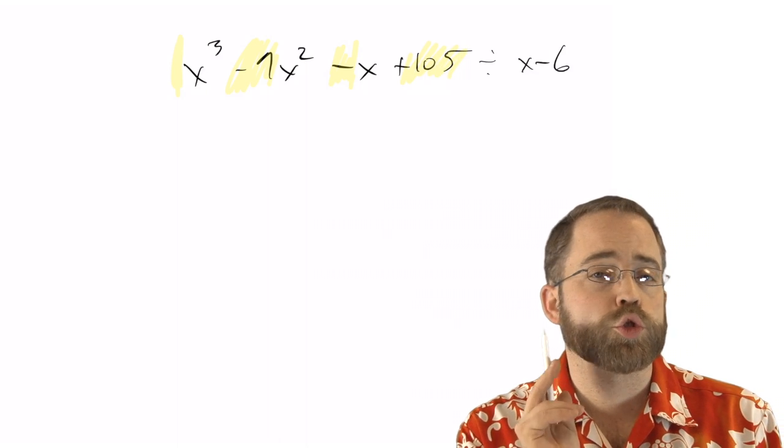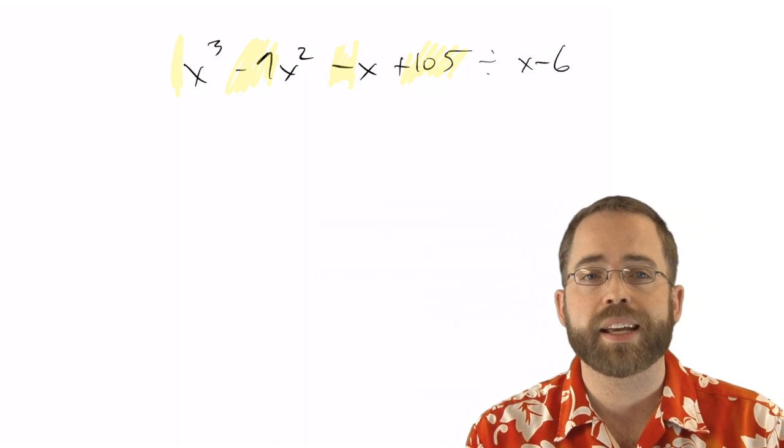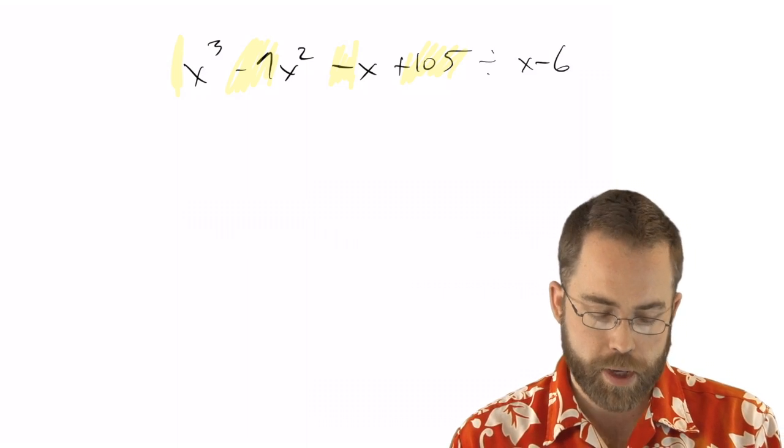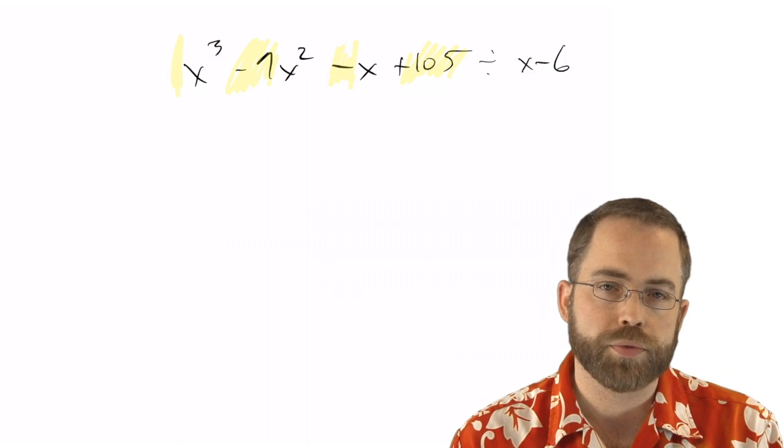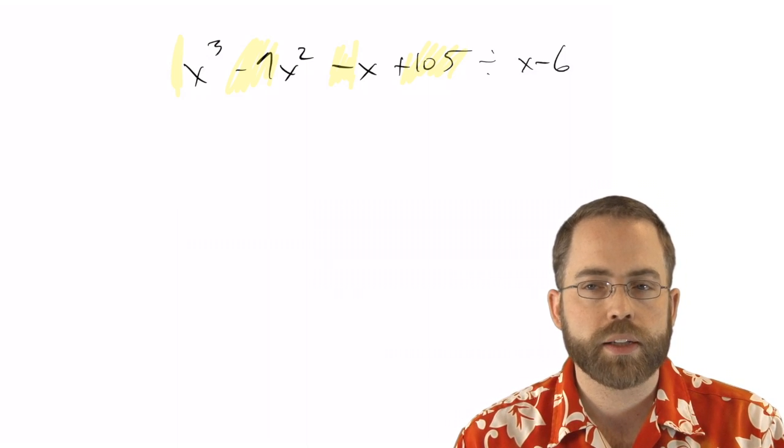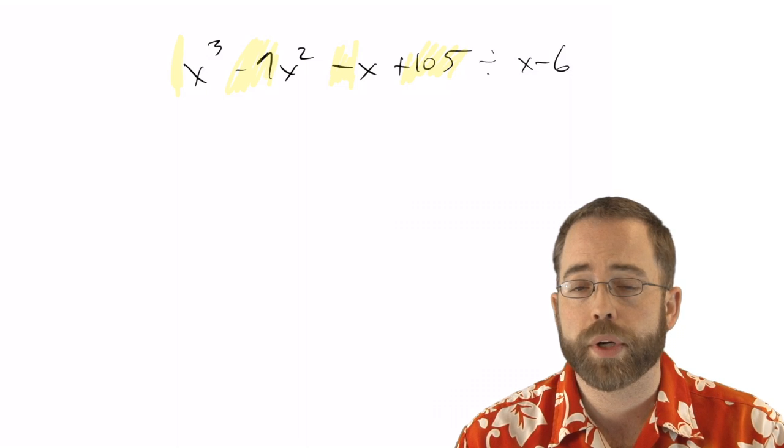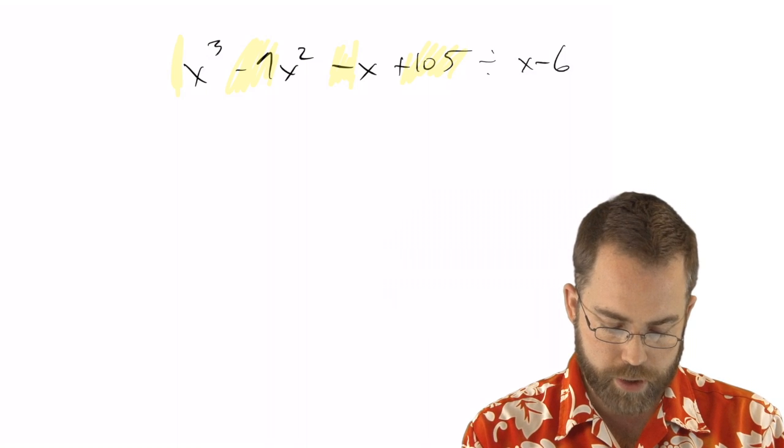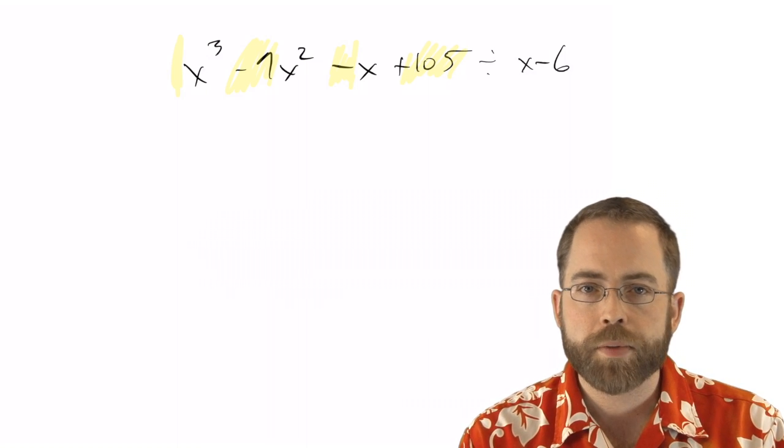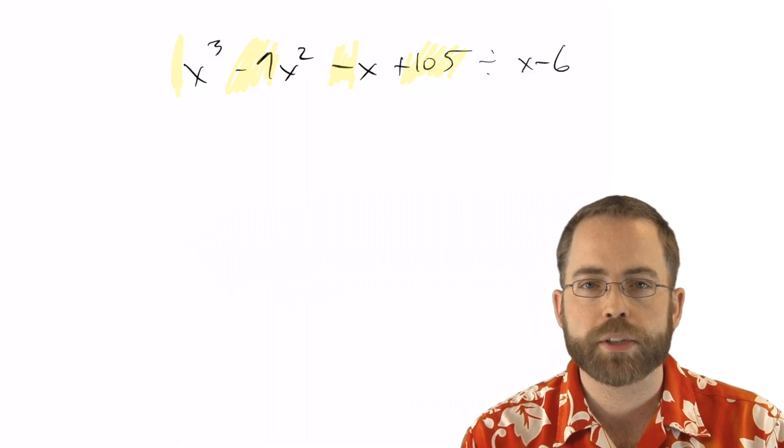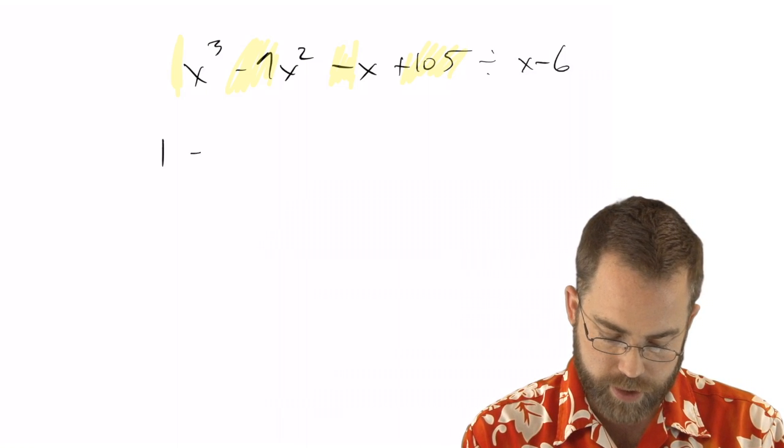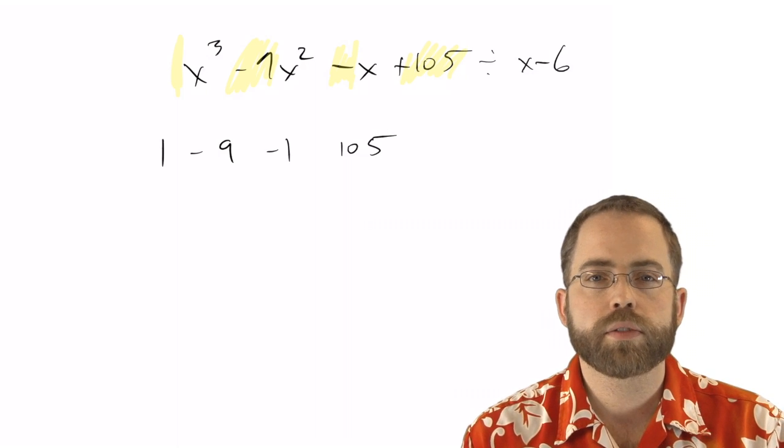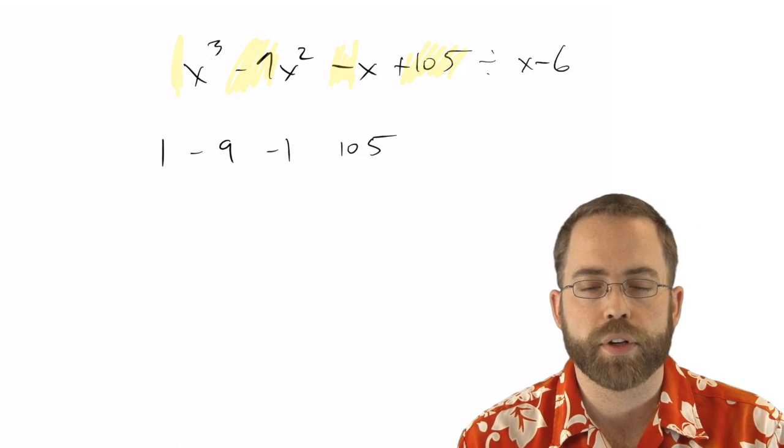Now the part where you're going to screw up, where you're going to make a mistake, is there's going to be a term missing. So for example, if this had gone straight from x cubed minus x plus 105, you have to recognize, oh, there's no x squared, I need to put a 0 there. But you're going to fall for that. So be careful, don't forget that every term must be accounted for, every degree must be accounted for. In this case, they're all here, but you might forget some coefficients of 0 if they're not there.